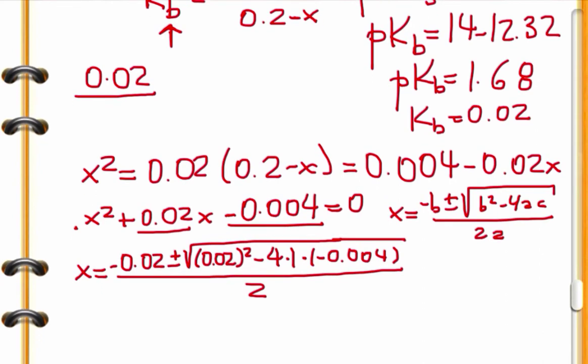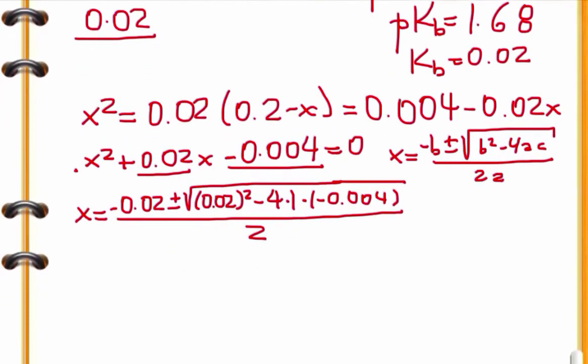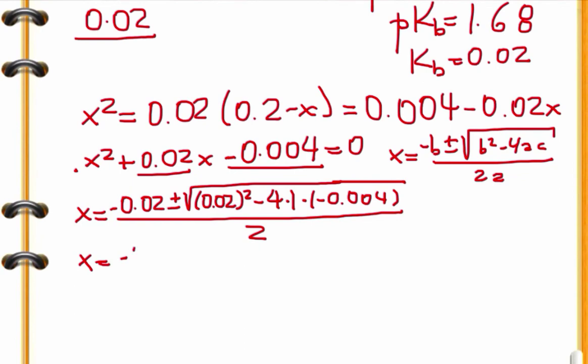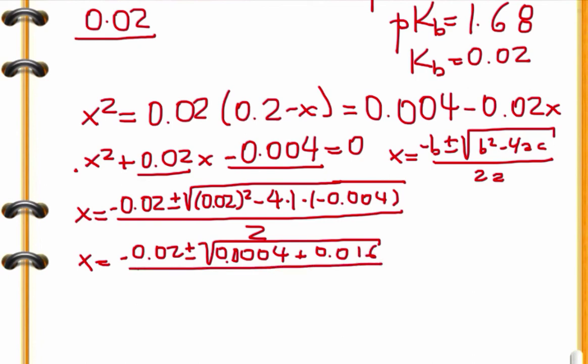Let's simplify this thing here to find the solution. It could plug in the calculator directly as well. Now, X is equal minus 0.02 plus minus square root of 0.004, 0.002 here to give 0.004, 0.004, and the other term there would be 16, that is a plus because of the minus of the formula, minus of the number, 0.016, divided by 2.